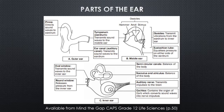The eardrum transmits the sound waves to the middle ear, specifically to the ossicles. The ossicles receive the sound from the eardrum, vibrate as they receive those sound waves, and amplify the sound. The other part of the middle ear is the Eustachian tube, which equalizes the pressure between the air outside the ear and within the middle ear.